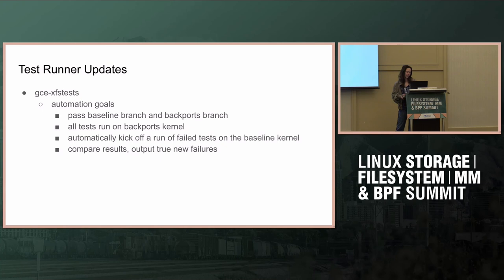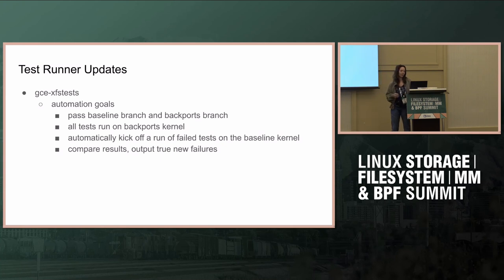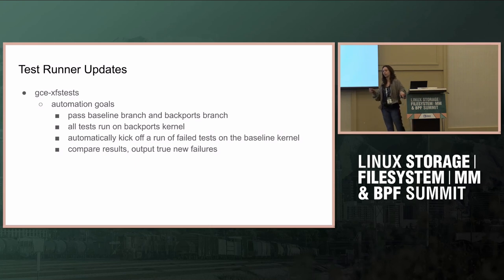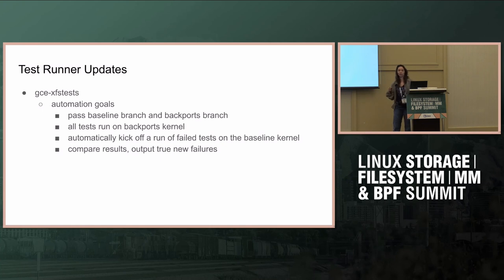At least for GC XFS tests, which is what I primarily use, I would like to do away with testing on the baseline branch altogether, because if something is passing on the backports branch we don't really care if it was passing or failing before that. The end goal is to launch on the backports branch and GC XFS tests can monitor for when it finishes, collect all the results, and if it sees any fails or flakes, automatically relaunch that with a high run count on the baseline branch, then compare all results and output the true possible new regressions.